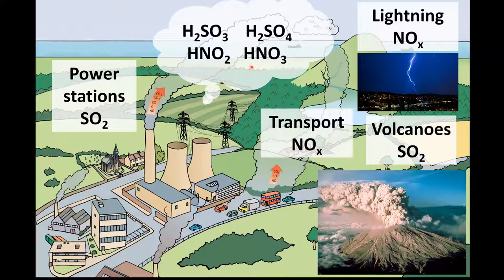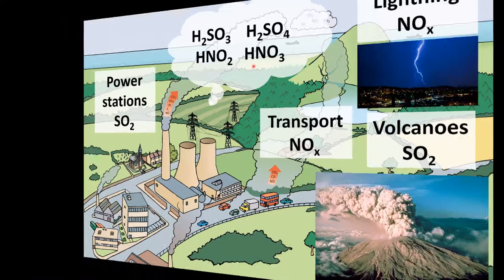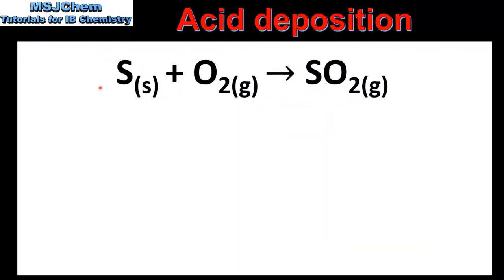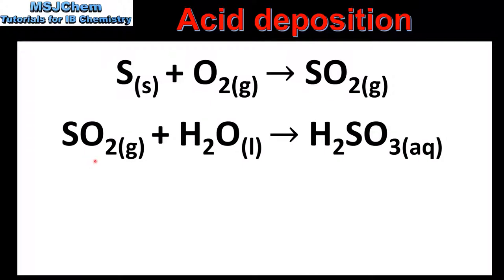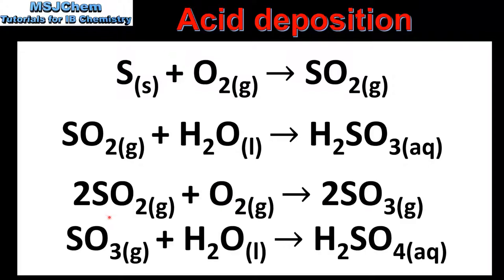Next we'll look at the formation of these acids in more detail, starting with the formation of sulfur dioxide. In this equation sulfur reacts with oxygen to form sulfur dioxide. In the next equation the sulfur dioxide reacts with water to form H₂SO₃, which is sulfurous acid. Alternatively, the sulfur dioxide can react with oxygen to form sulfur trioxide, and the sulfur trioxide can then react with water to form H₂SO₄, which is sulfuric acid.